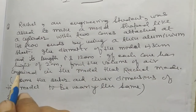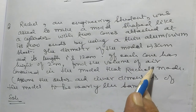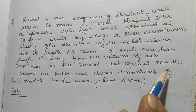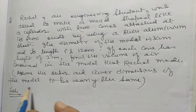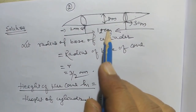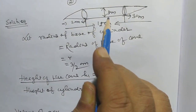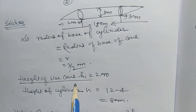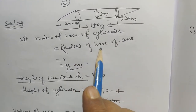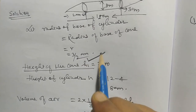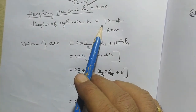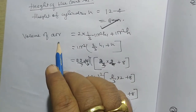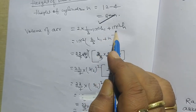My dear student, if each cone has height of two centimeters, find the volume of air contained in the model that Rachel made. Assume the outer and inner diameters of the model to be nearly the same. To get the volume of air, we will find the volume of the cylindrical portion and the conical portion. The radius of the cylinder equals the radius of the base of the cone, which is three by two centimeters. Height of cone H1 equals two centimeters, height of cylinder H equals eight centimeters. Volume of air equals two into one by three pi R square H1 plus pi R square H.